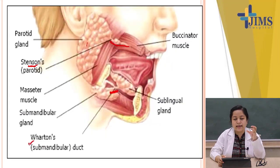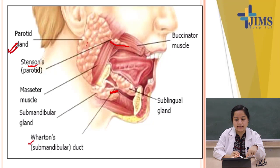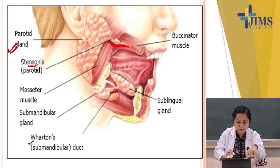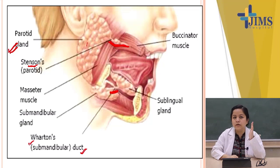These glands have ducts. The parotid gland has a duct called Stensen's duct. The submandibular gland has another duct called Wharton's duct. The sublingual gland is the third major salivary gland.